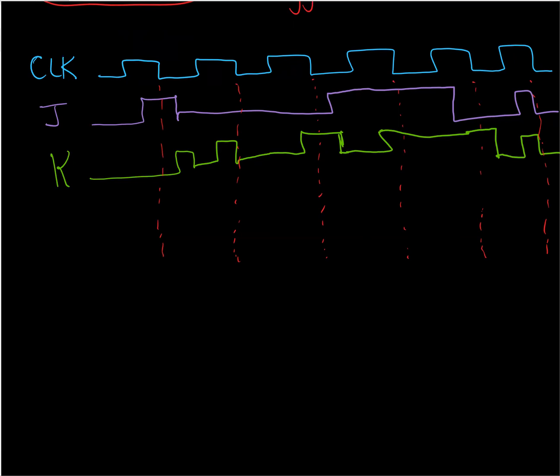And then we can draw our output Q. So initially, we'll assume Q is reset. Now, at this point here, J becomes high, but the output does not actually respond to that. The output has no response until the falling edge of the clock. So the output will continue to be low until the clock edge falls. And at that time, J is high and K is low. So that will be a set condition.